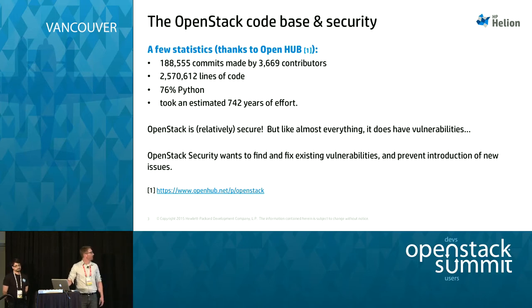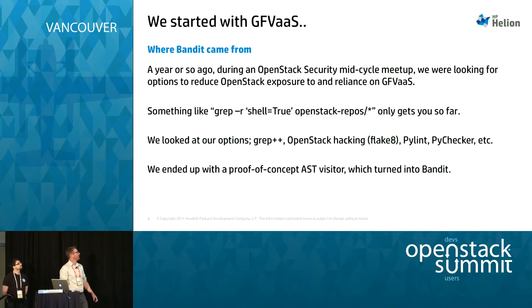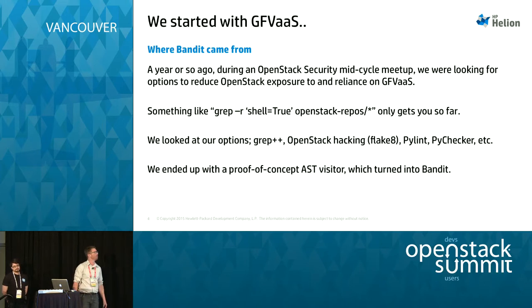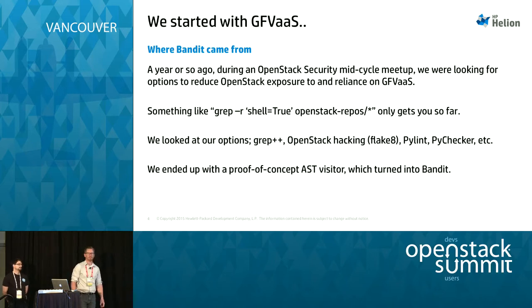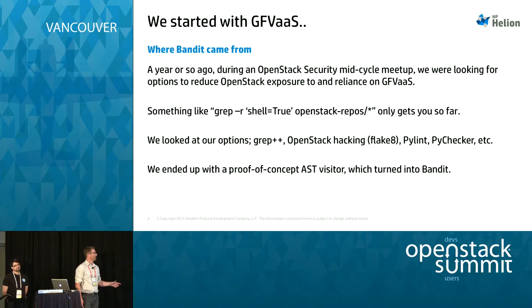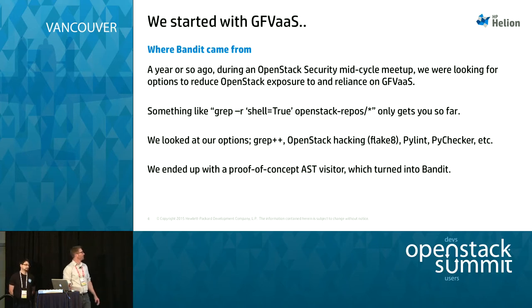So this is the environment we work in. About a year and a half ago, we were sitting around in a mid-cycle meetup talking about how part of our project team's role was providing GFV as a service — that's grep for vulnerabilities as a service. We'd find an issue in one project, then figure out a way to identify that issue in other projects across OpenStack. A classic one was shell equals true being used, introducing essentially a command line injection vulnerability.